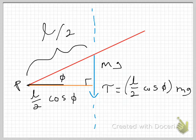So in summary, I found the perpendicular distance to be L over 2 cosine of phi. I multiplied that by the force, which is mg.